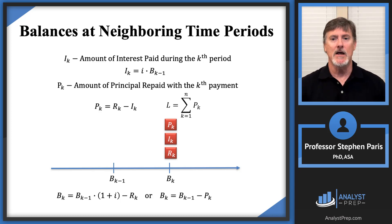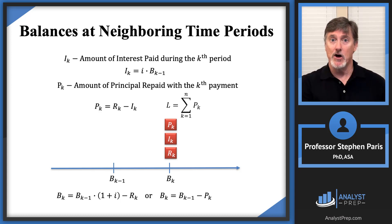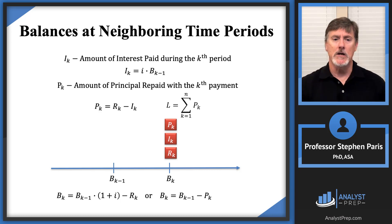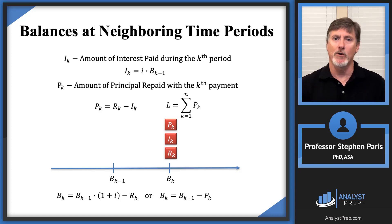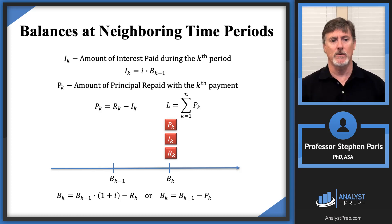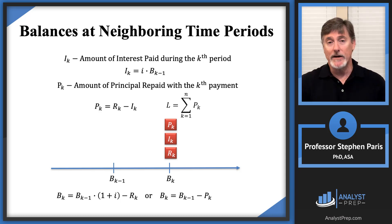So let's look at the two ways to calculate the balance at time K. One is to take the balance at the beginning of the period, accumulate it, and then subtract off the total payment. The second way: find the balance at time K by taking the balance before that and subtracting off the amount of principal being repaid in that payment. Try to develop some intuition on this rather than trying to memorize a formula.